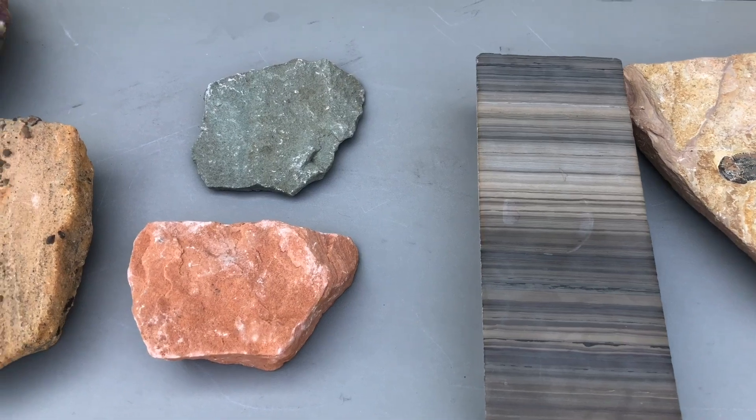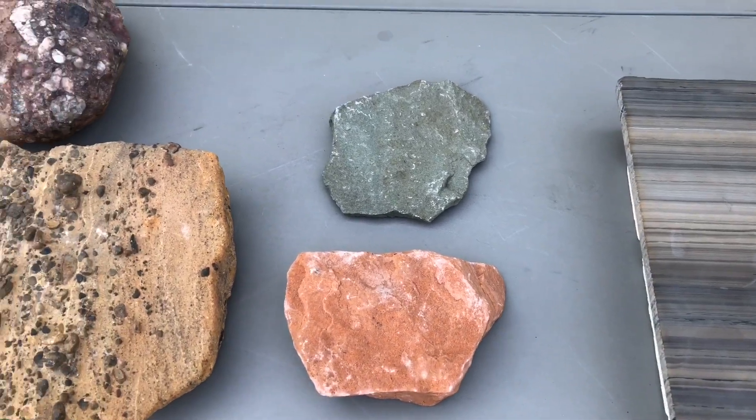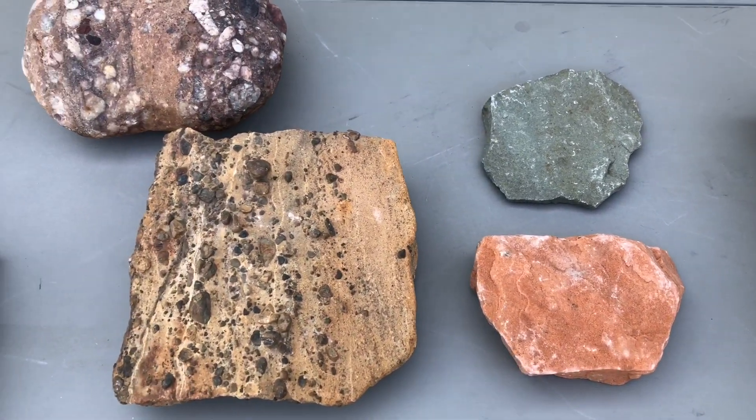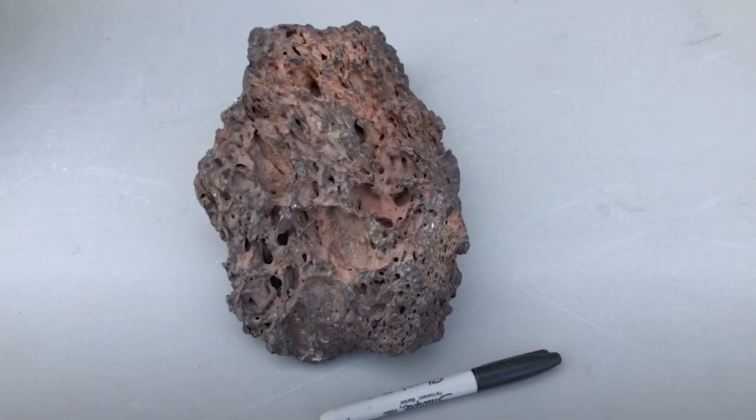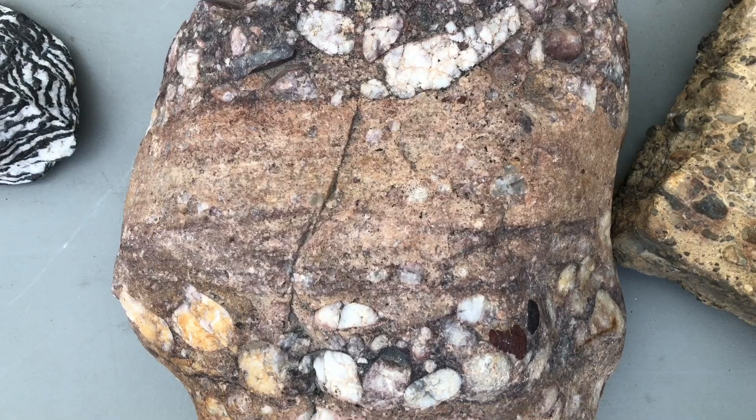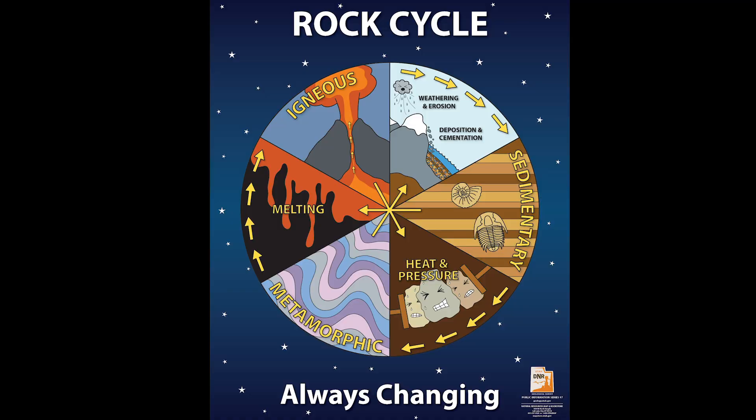All rocks can be placed into one of three groups: either igneous, sedimentary, or metamorphic, depending on how they were formed. Here is the rock cycle.